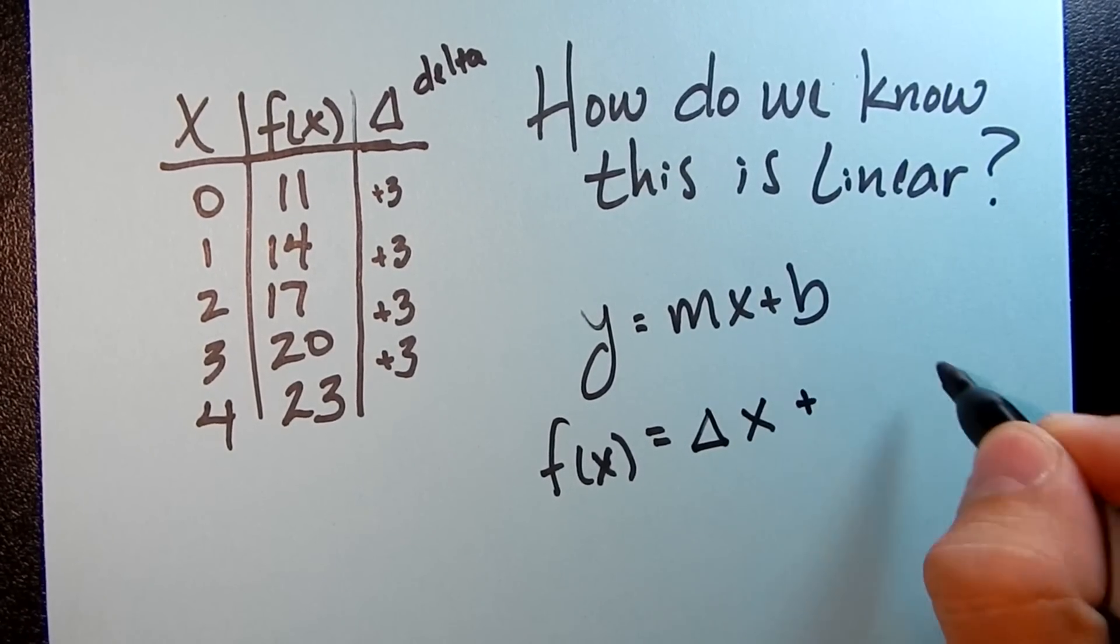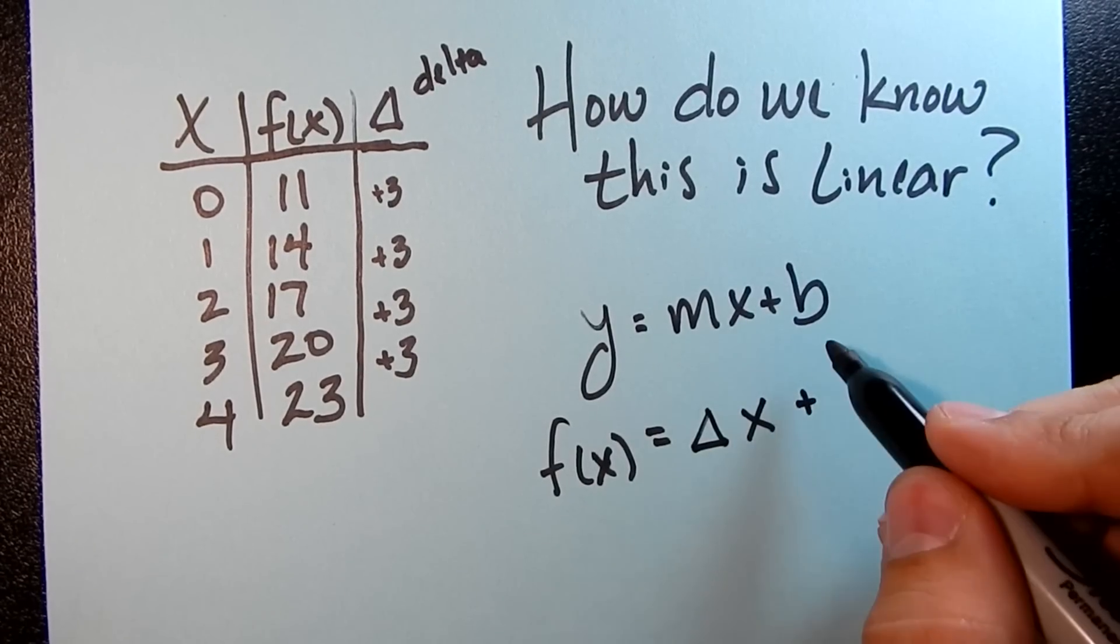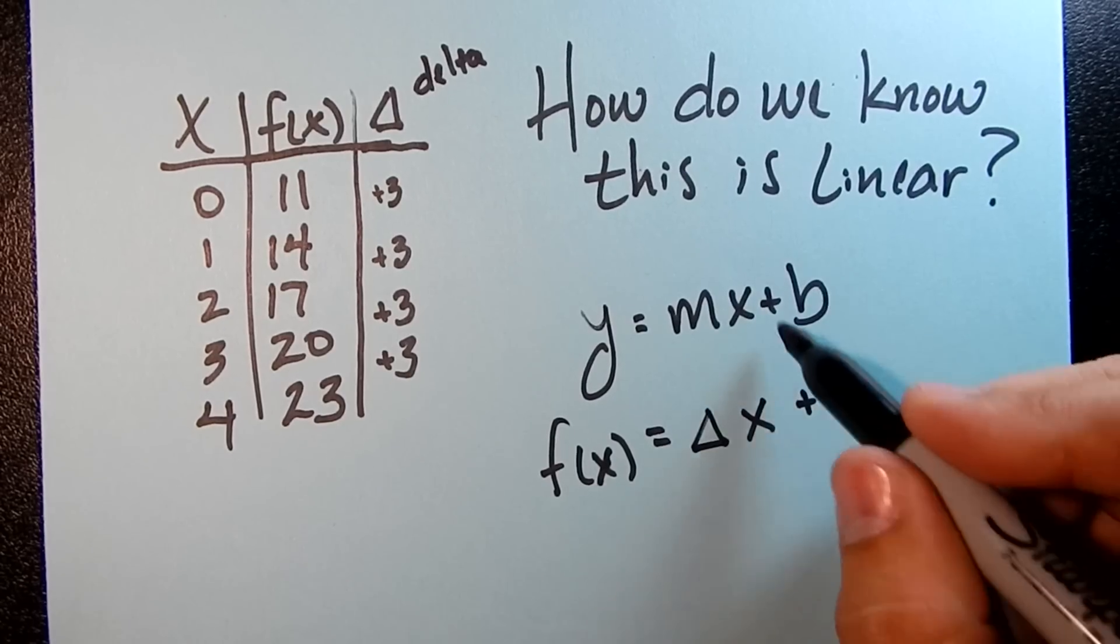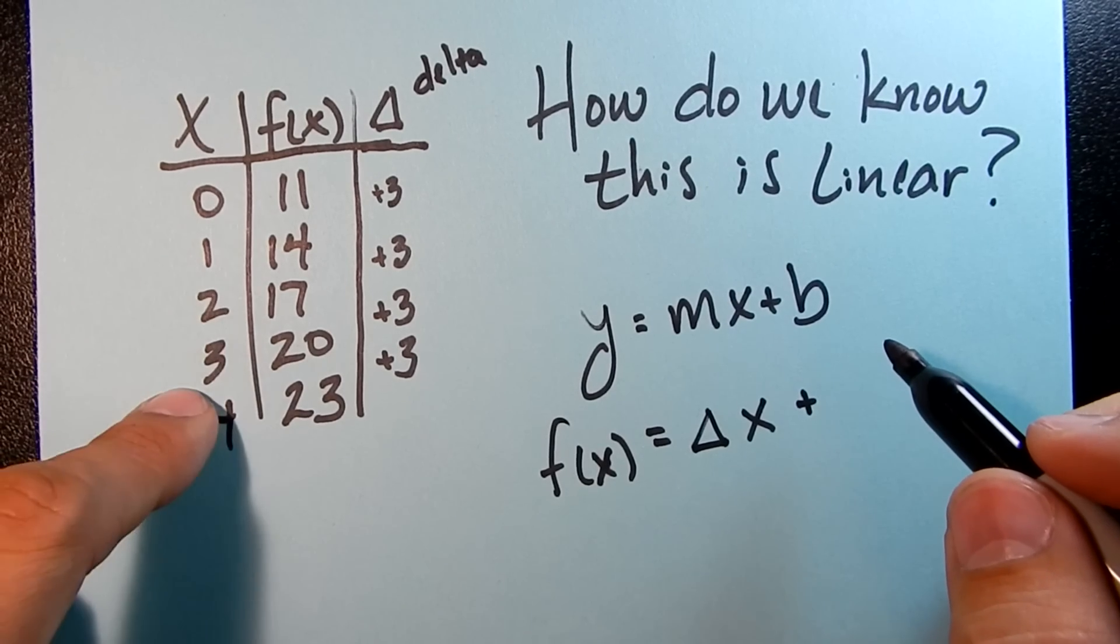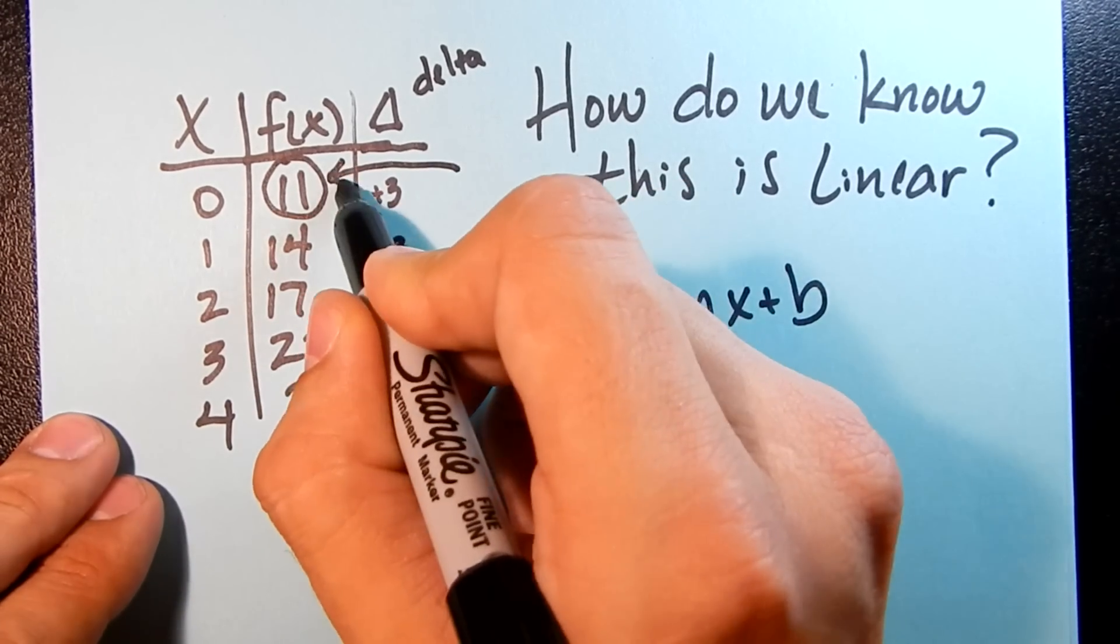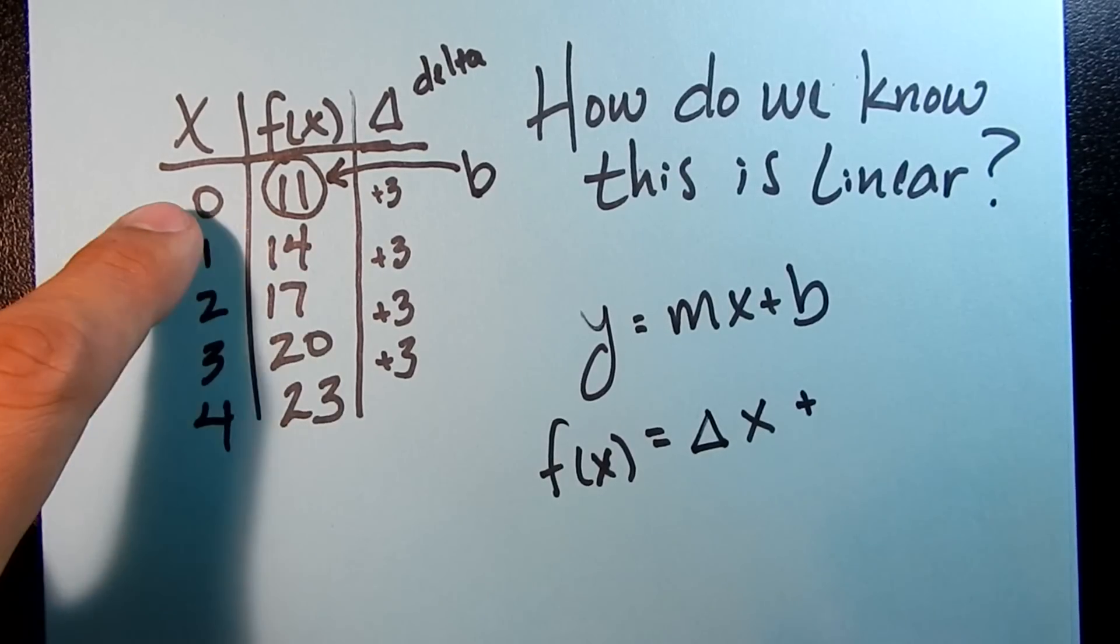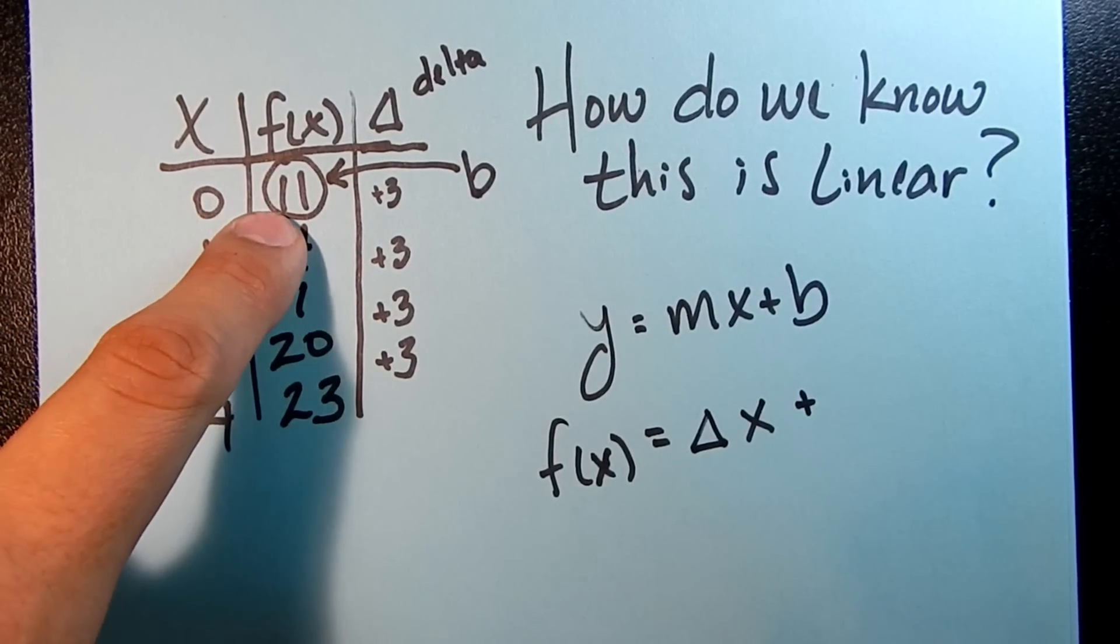And this last piece, this b, is, well, we're going to write it in a form that's maybe not quite as straightforward. But the way that you get this b term is most often from your table. This value right here, in this very specific spot, this is your b value. Your b value is the output when the input is 0. So your output here is 11. Your input here is 0.